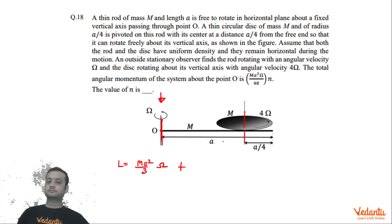So Ma²/2, where a is actually a/4 since radius of the disc is a/4. So Ma²/32 into ω which is 4Ω. So this is the angular momentum of the disc about its center of mass.